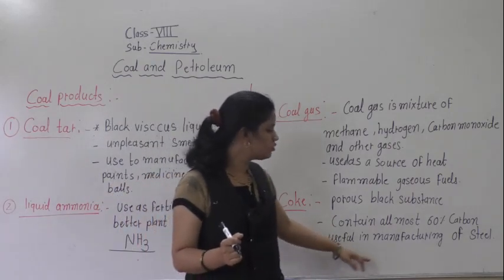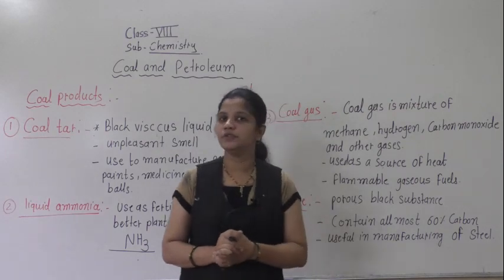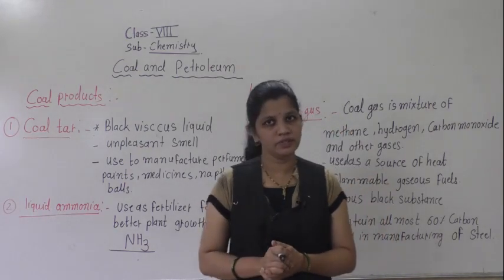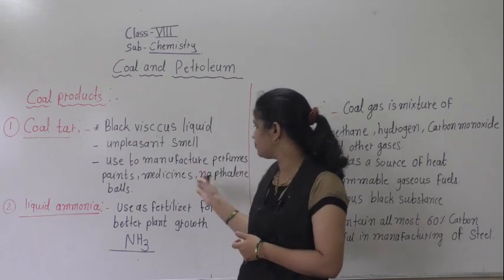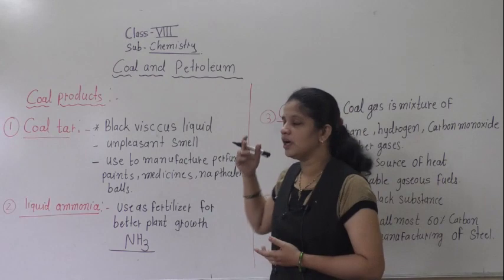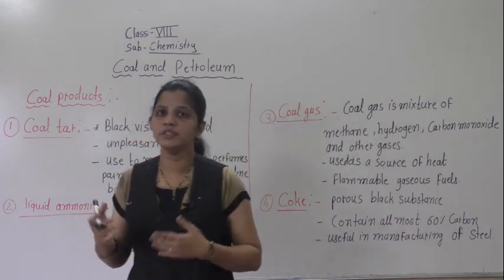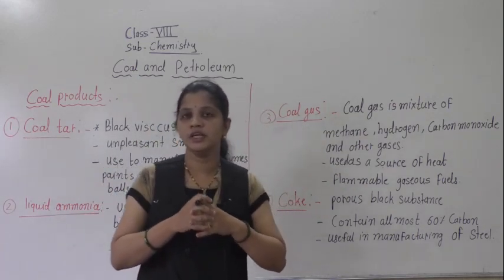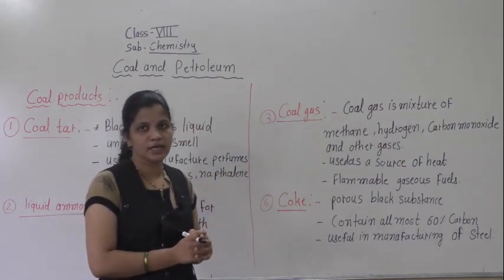So these are the uses of coal products. Let us review them once more. Coal tar is used to manufacture perfumes, paints, medicines, and naphthalene balls. Liquid ammonia is used as a fertilizer — because it contains a large amount of nitrogen, and nitrogen is very essential for plant growth.